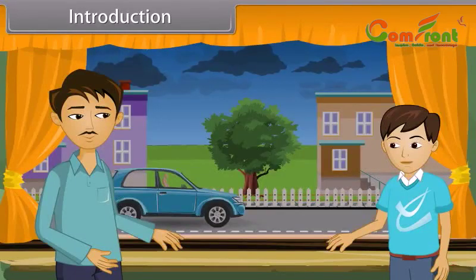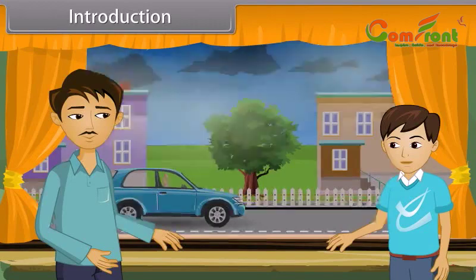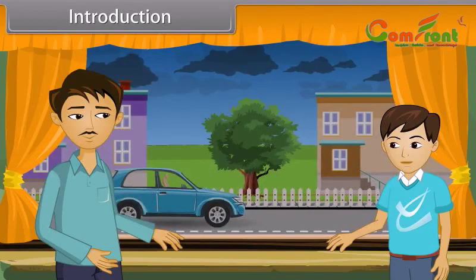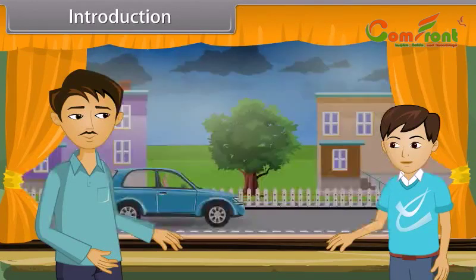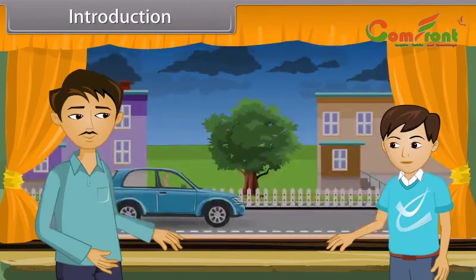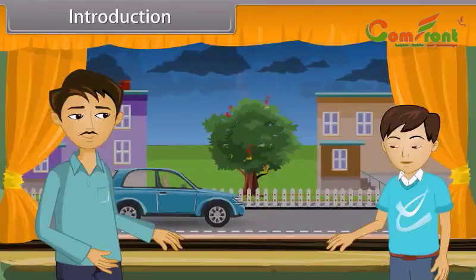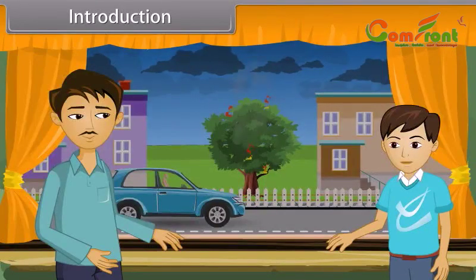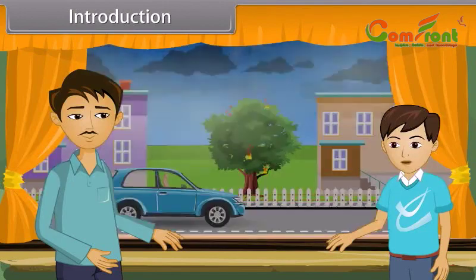Prince and his father are standing at the windowside viewing outside. It is rainy weather. Suddenly, lightning occurs and falls down. Prince observed that the tree on the road catches fire due to lightning. He asked his father why the tree catches fire and the car remains safe on the road.